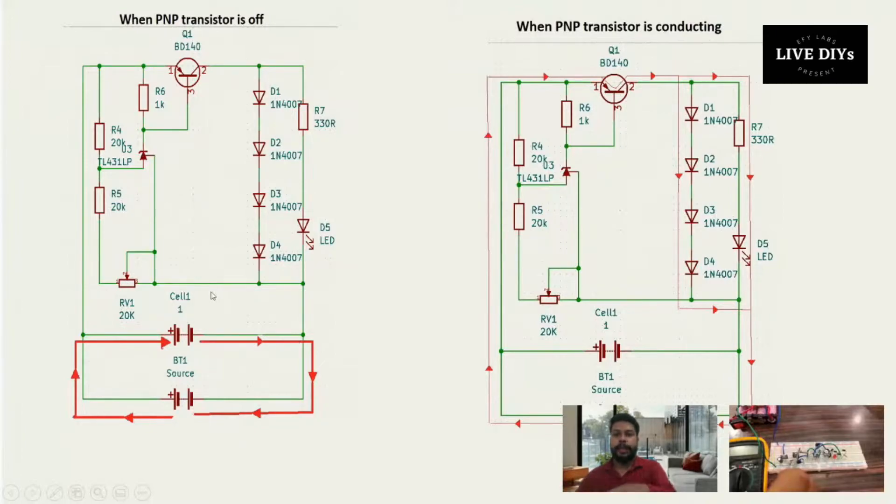It starts conducting and the current flows from our source to BD140 to the diode and energy is wasted. But when the circuit, when the reference voltage is lower than what we have set, suppose it is at 3.8 volts, the battery is at 3.8 volts, then our TL431 will be in open state.